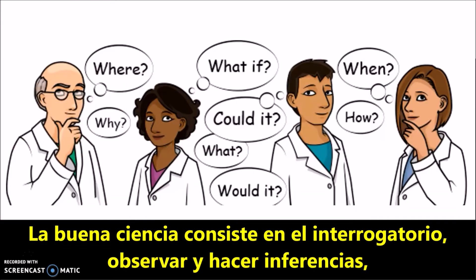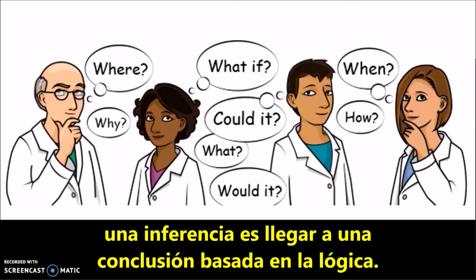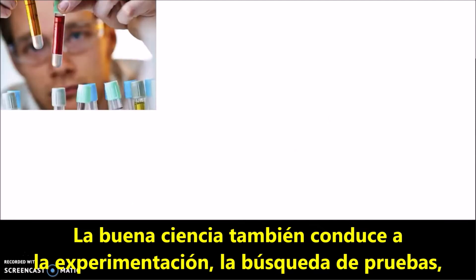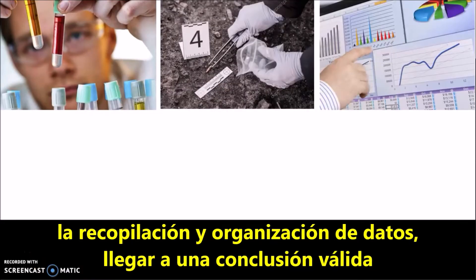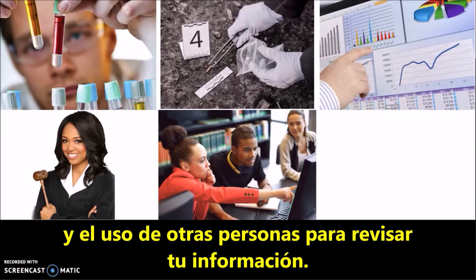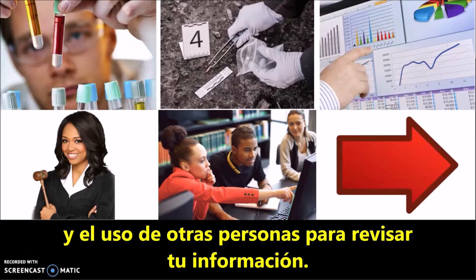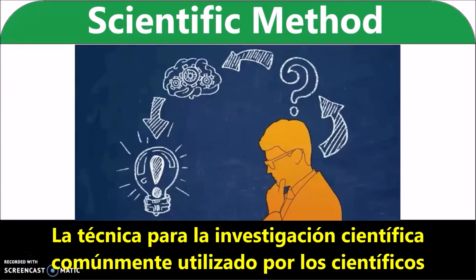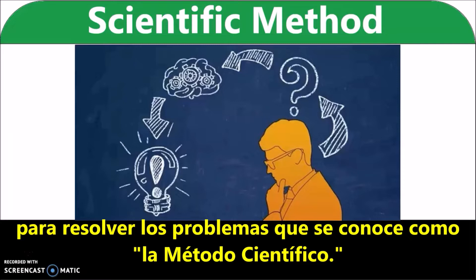Good science involves questioning, observing, and inference making. An inference is to reach a conclusion based on logic. Good science also leads to experimentation, finding evidence, collecting and organizing data, drawing a valid conclusion, and using other people to review your information. The technique for scientific inquiry, commonly used by scientists to solve problems, is known as the scientific method.